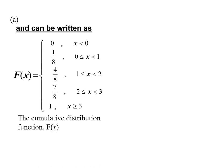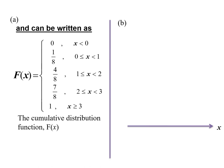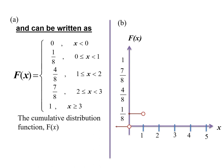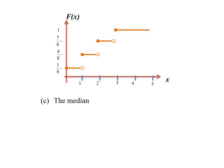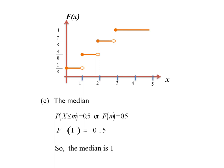We can represent the cumulative distribution function using a graph, with x on the x-axis showing values 1, 2, 3, 4, 5, and probability on the y-axis. We use horizontal lines to represent the answer. To find the median, we use the formula F(m) = 0.5. Since F(1) = 0.5, the median equals 1.